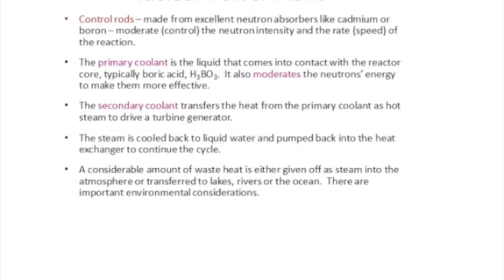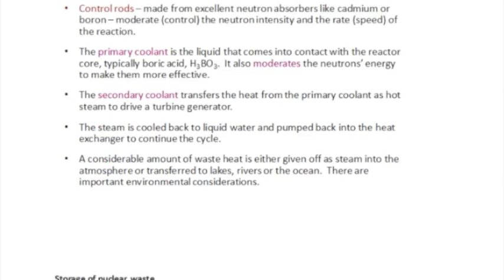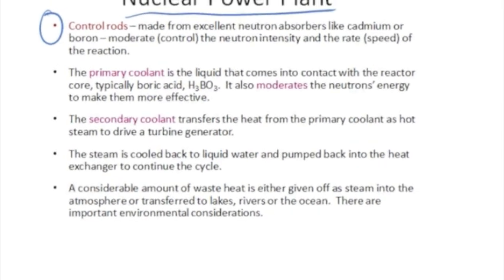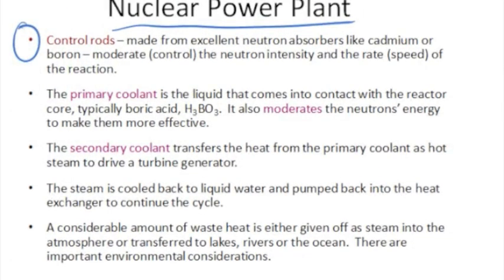One thing that I just want to go over is just, I just want you to be aware of some basic parts of the power plant. You can read about this in your book, because I'm going over it very quickly. But I'm highlighting some of the parts of the power plant that I want you to be familiar with. The control rods I just talked to you about, they have to be made from some material that's a good neutron absorber, like cadmium or boron, so they can control the amount of neutrons.